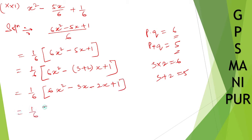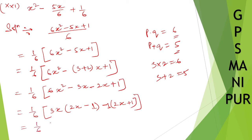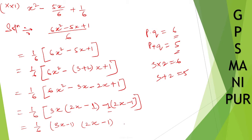So 1 by 6 times (6x squared minus 3x), take 3x common — 3x(2x minus 1) — then take minus 1 common from the remaining terms, so it becomes minus(2x minus 1). So: 1 by 6 times (3x minus 1)(2x minus 1). You can open the bracket and write it like this also. So this is the answer.